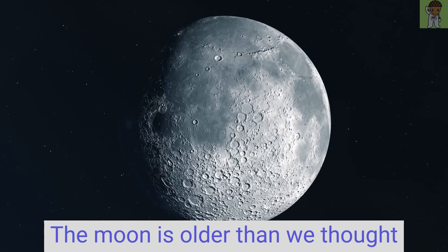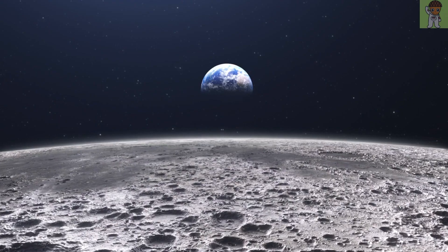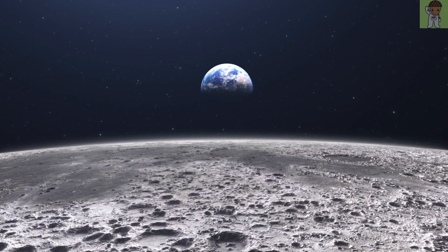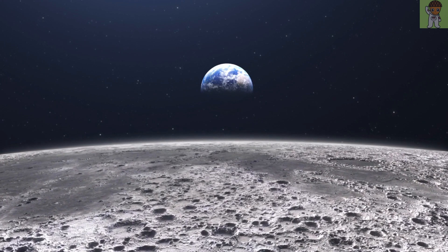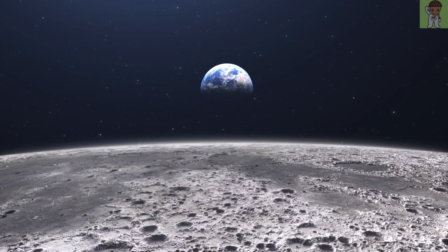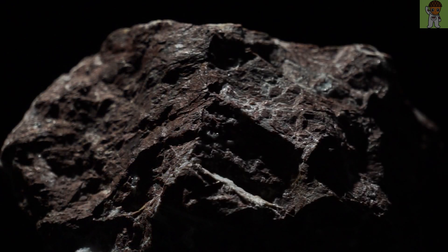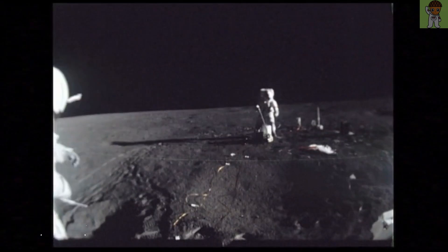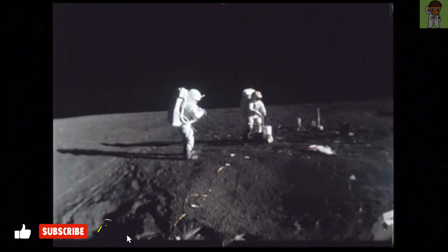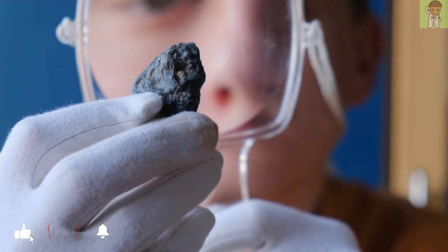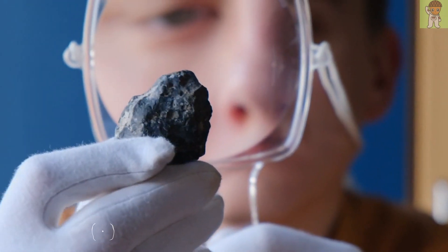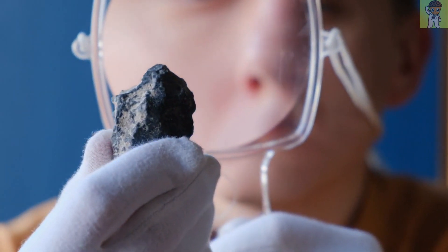The Moon is older than we thought. Closer to home, a study revealed that the Moon may be at least 40 million years older than we previously thought. Researchers examined tiny impact crystals, known as zircon crystals, within lunar rock samples brought back by NASA's Apollo 17 mission.